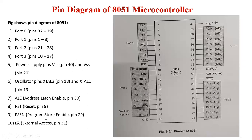PSEN stands for Program Store Enable, and it is pin number 29. It is the active-low output control signal used to activate the enable signal of the external ROM or EPROM. It is activated every six oscillator periods while reading from external memory, and this signal acts as the read strobe to external program memory.